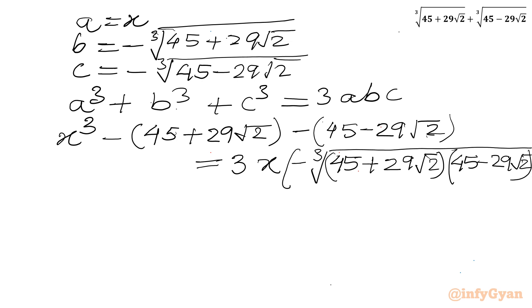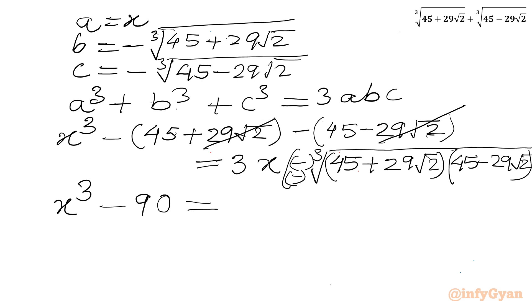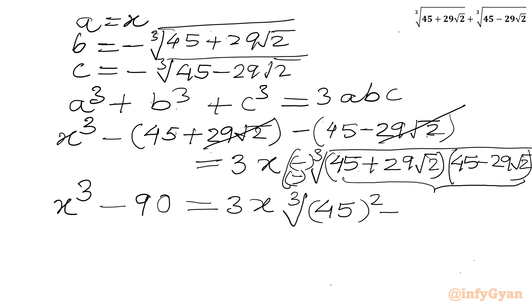Minus times minus becomes plus. If we cancel, 29 root 2 and minus 29 root 2 cancel out. On the LHS: x cube minus 45 minus 45, so minus 90. The RHS will be 3 times x times the cube root of — this is a plus b times a minus b — so 45 squared minus (29 root 2) whole squared.